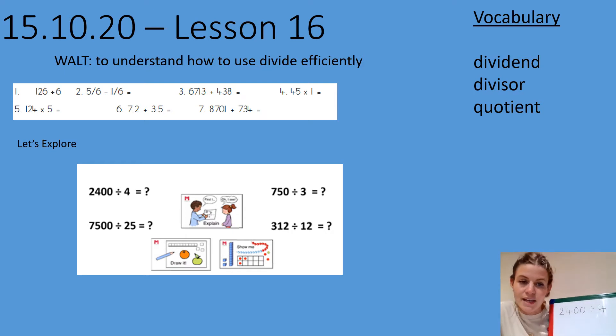So if we take one of the calculations from the Let's Explore, we've got 2400 divided by four. Straight away, we should spot that 24 divided by four is a known fact there. 24 divided by four is equal to six. That gives me a quotient of six.